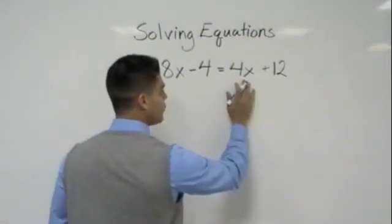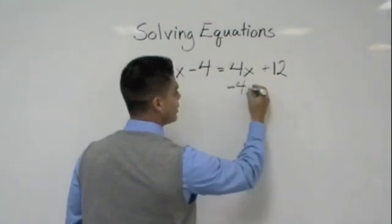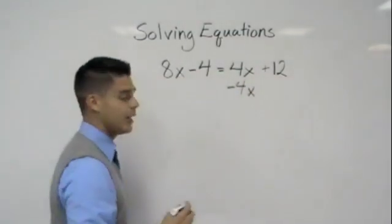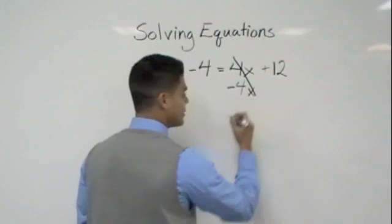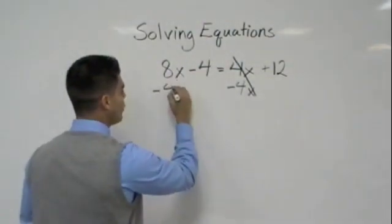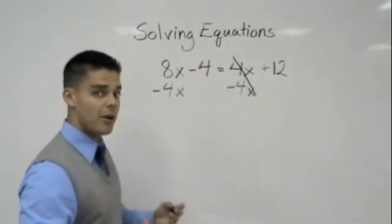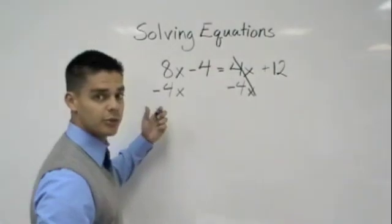So how do I get rid of 4x from this side? I would do the opposite which would be subtracting a 4x and that would get rid of this on this side. Whatever we do to one side we must always do to the other, so I'm going to go ahead and write that 4x right under my 8x so I can remind myself, combine like terms.